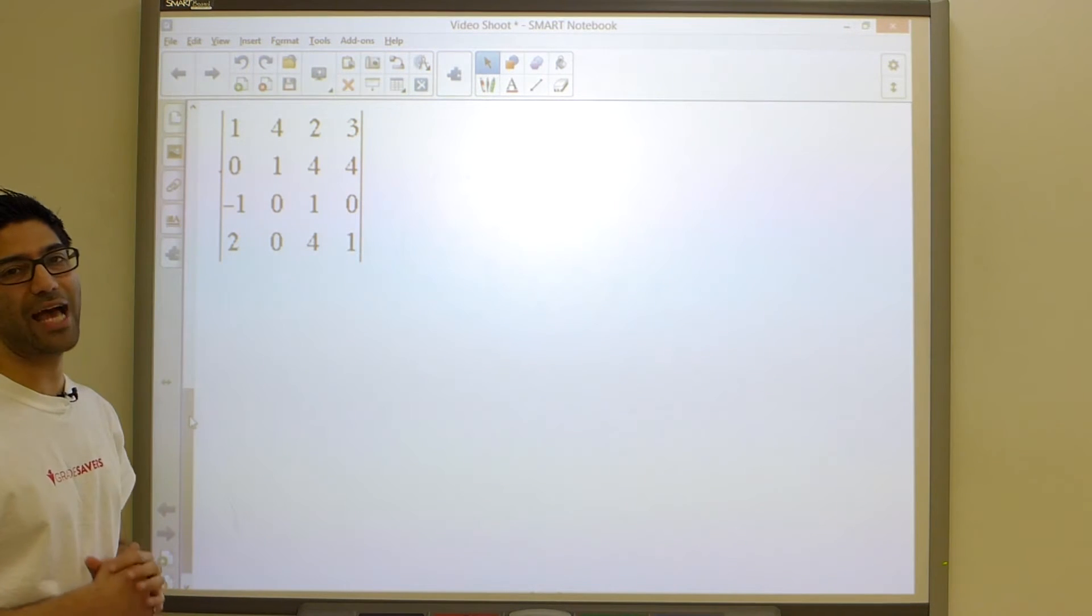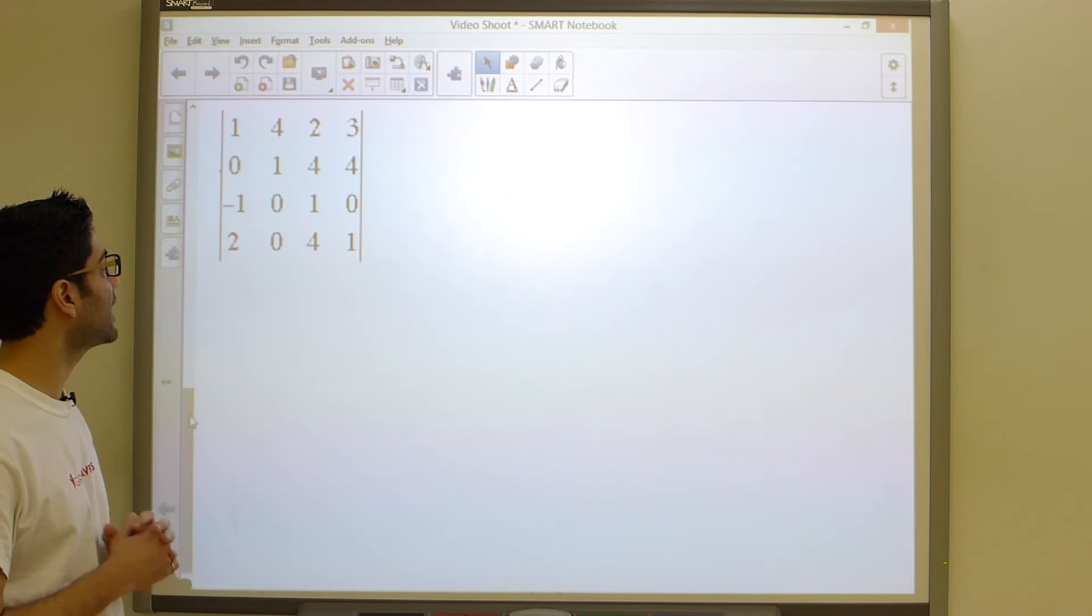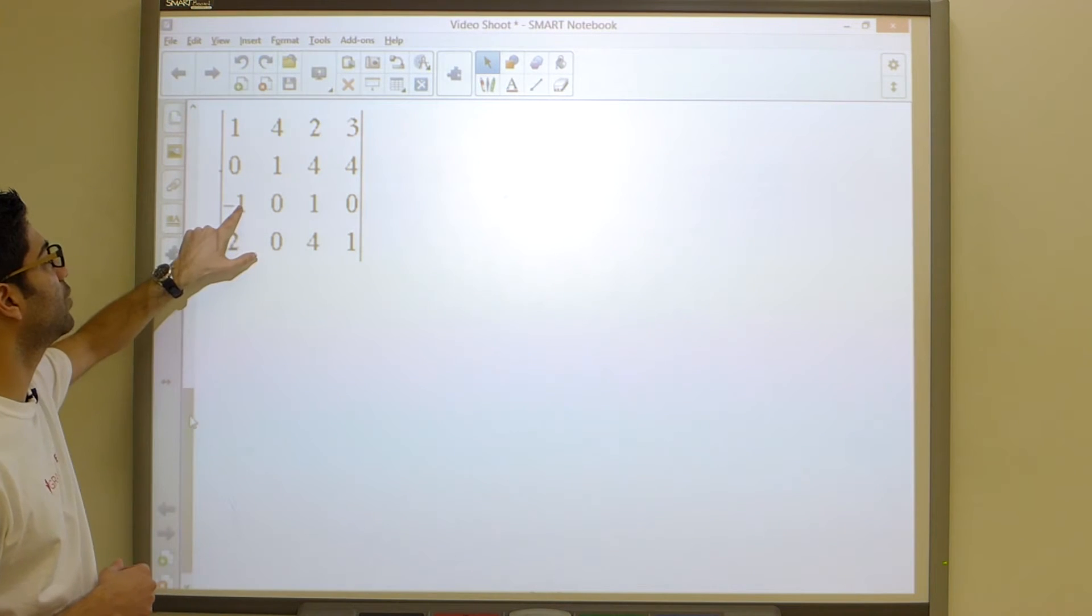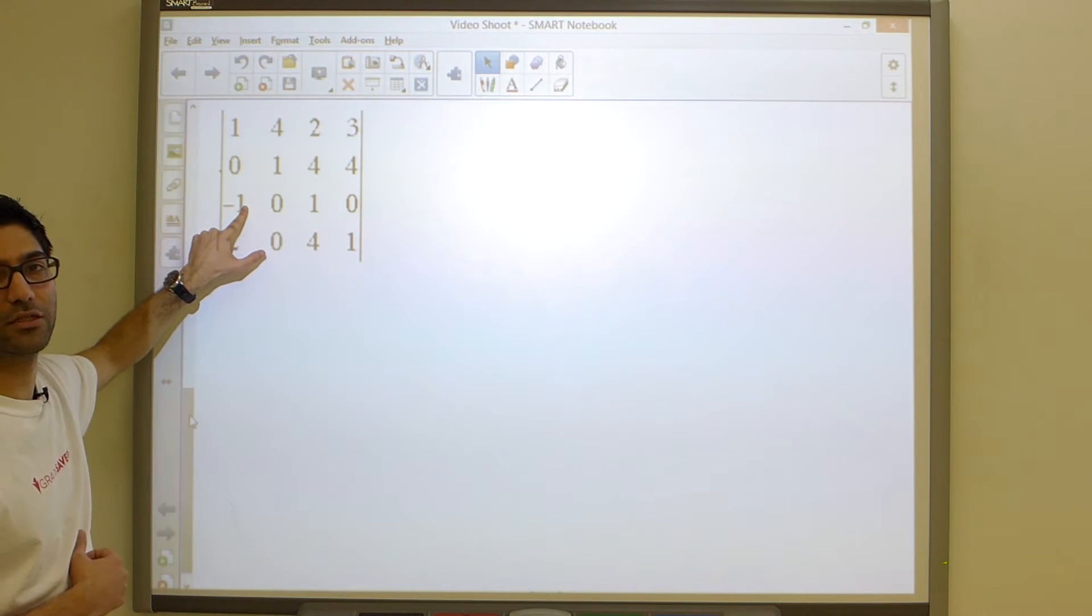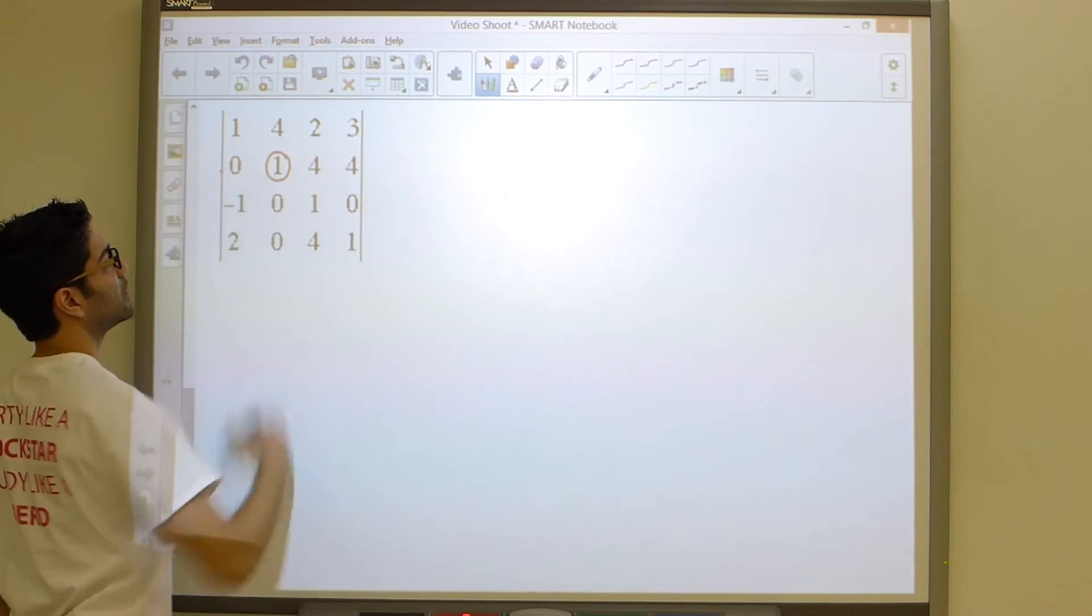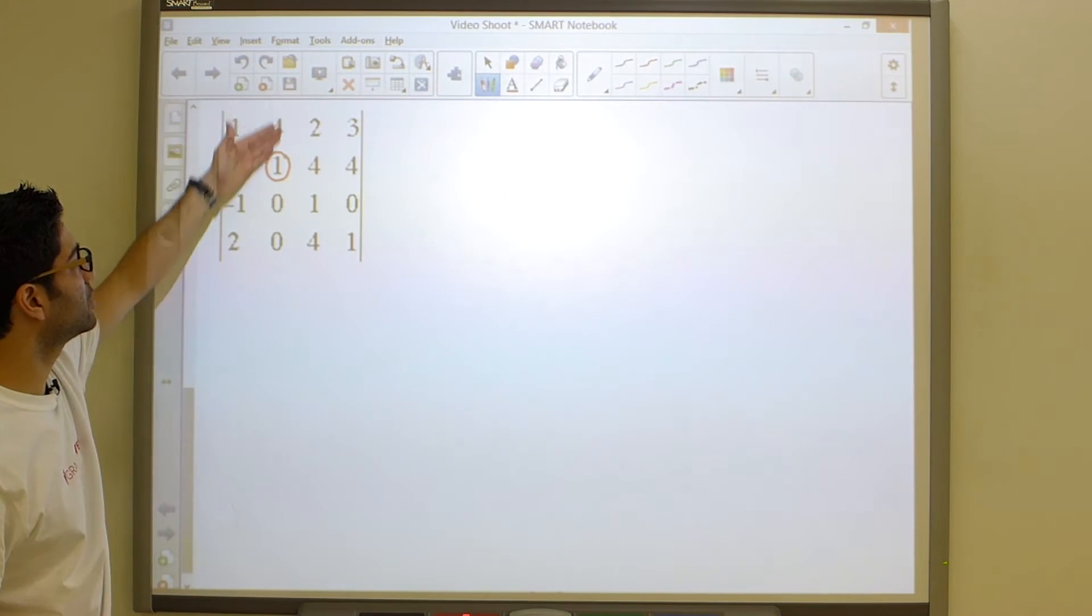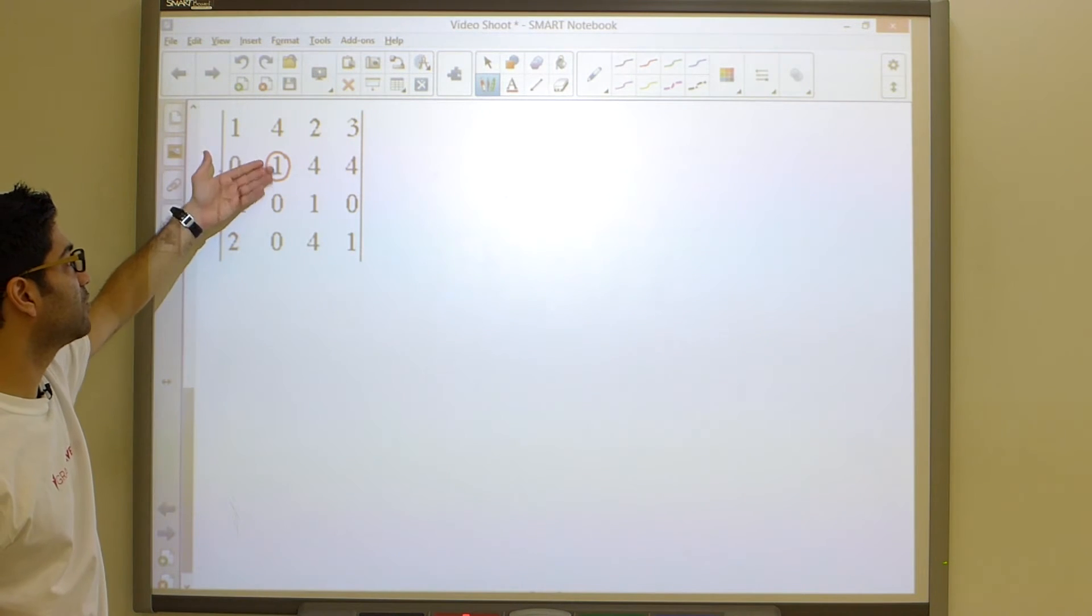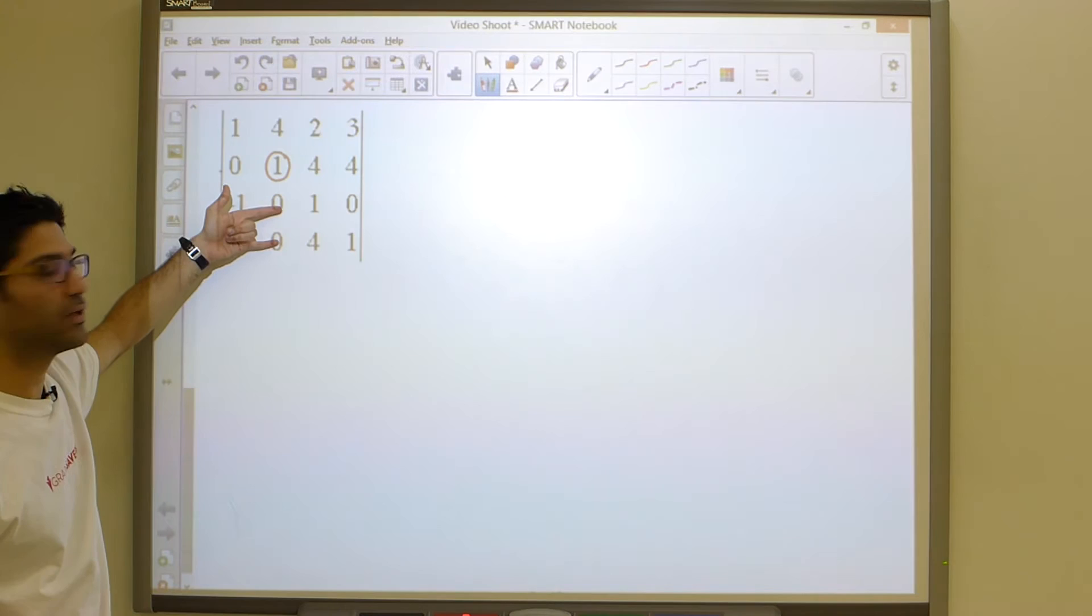So choose a 1 anywhere over here and use it to create zeros above and below. Now, understand that this 1 does not have to be at the right location. It does not have to be a pivot 1. I could have taken this 1 had it been positive, for instance. We are going to take this 1 and we're going to use it to create zeros above and below. The reason I picked this one is because I have two gifts right here.